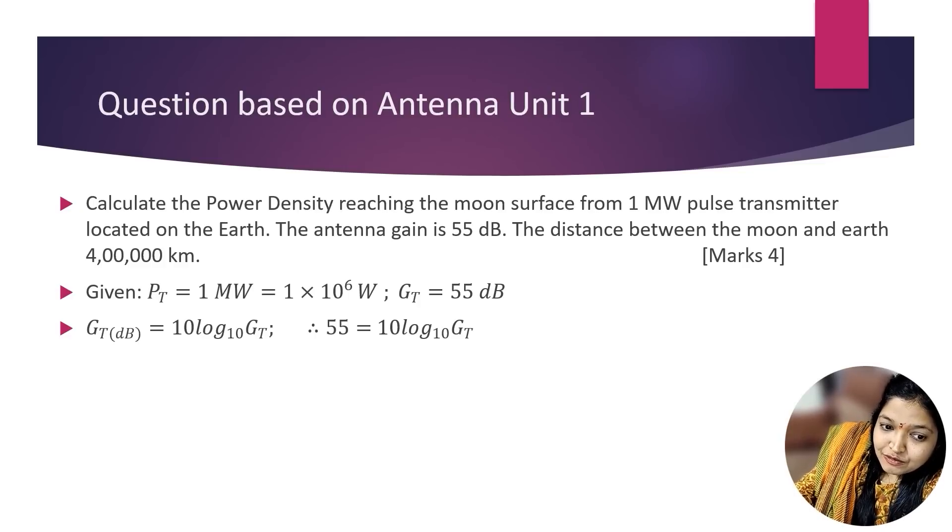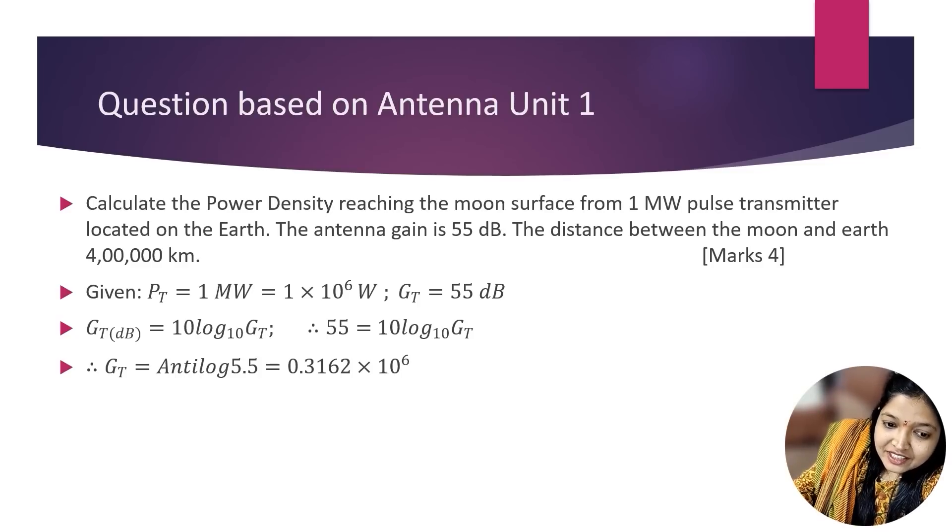First, we have to calculate Gt because it is given in dB. The formula is Gt(dB) = 10log₁₀Gt, so 55 = 10log₁₀Gt. Taking the antilog, Gt = antilog(5.5) = 0.3162 × 10^6. This is your Gt value.